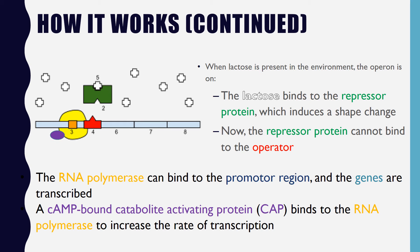When lactose is present in the environment, the lac operon is induced or turned on. Lactose binds to the repressor protein, which changes the protein shape. The operator binding site of the protein is no longer functional, so the repressor protein falls off the DNA. This allows RNA polymerase to bind to the promoter, and the structural genes lacZ, lacY, and lacA are transcribed as one mRNA transcript. The CAP protein facilitates RNA polymerase binding, which increases the rate of transcription. After the mRNA transcript has been made, it will bind to a ribosome for translation. The proteins needed for lactose catabolism will be made, and the bacterium will be able to break down the lactose that is now present in its environment.